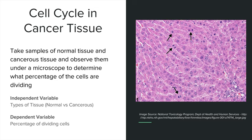So our independent variable will be the types of tissue that we use, whether it's normal or cancerous, and our dependent variable will be the percentage of dividing cells.